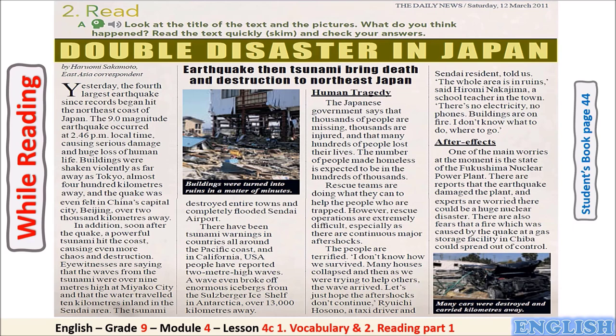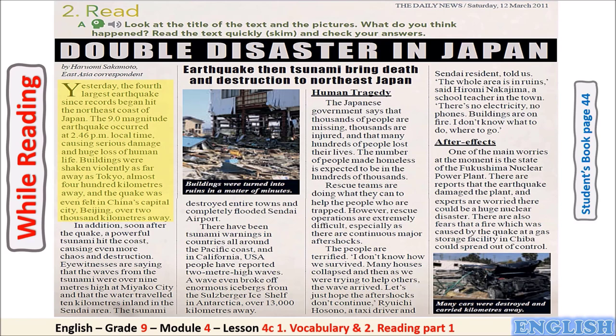'Double Disaster in Japan: Earthquake then tsunami bring death and destruction to northeast Japan. Yesterday, the fourth largest earthquake since records began hit the northeast coast of Japan. The 9-magnitude earthquake occurred at 2:46 pm local time, causing serious damage and huge loss of human life. Buildings were shaken violently as far away as Tokyo, almost 400 kilometers away, and the quake was even felt in China's capital city, Beijing, over 2,000 kilometers away.'